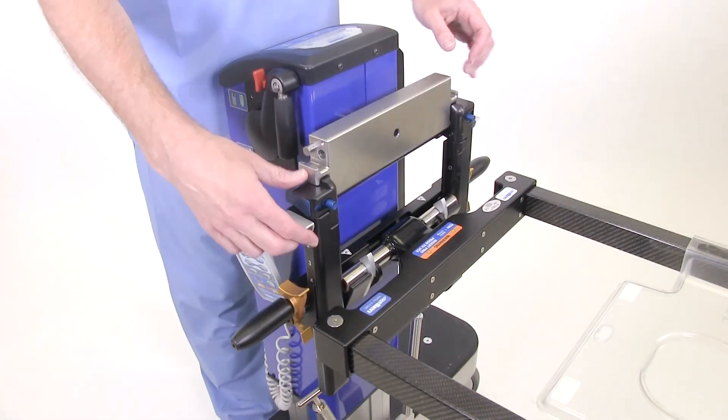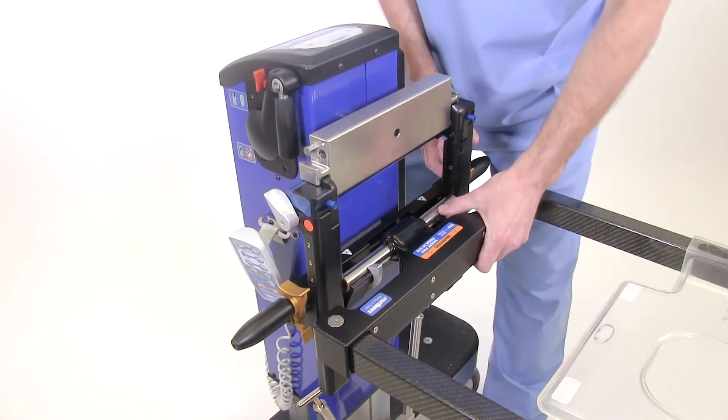Unlock silver tabs. Unlatch silver hooks. Lift and remove prone top.